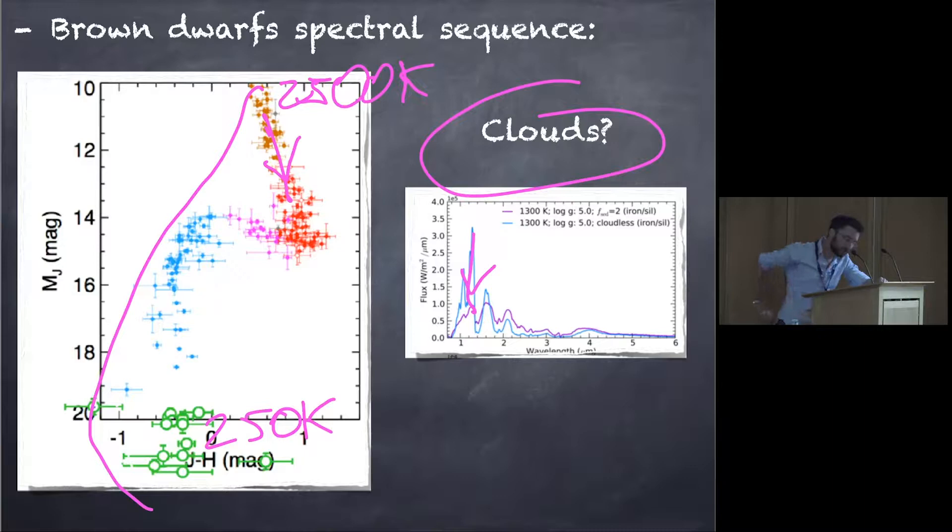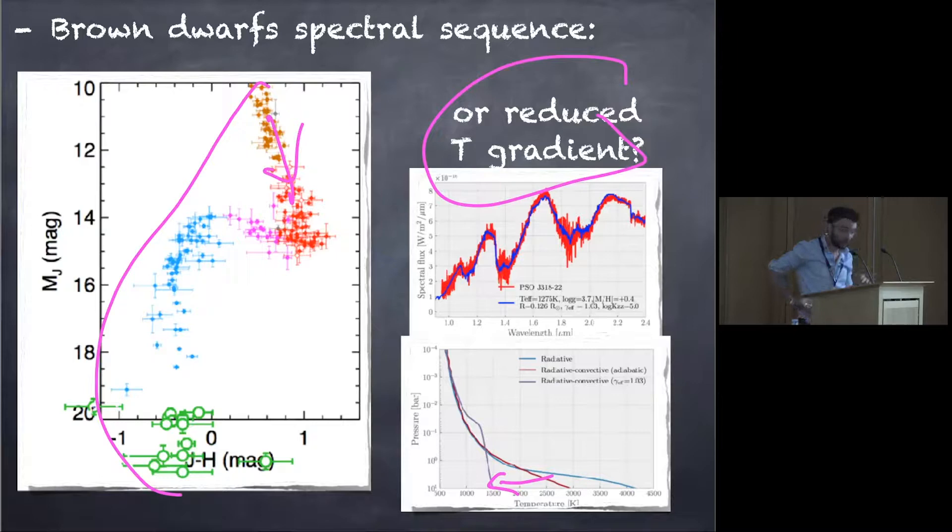What we have done in a series of papers to show that there is another solution that is actually to reduce the temperature in the deep layers, and it does actually the same thing, because the wavelength J-band flux are coming from deep layers. If these layers are cooler, they will emit less flux, and you end up with the same effect.